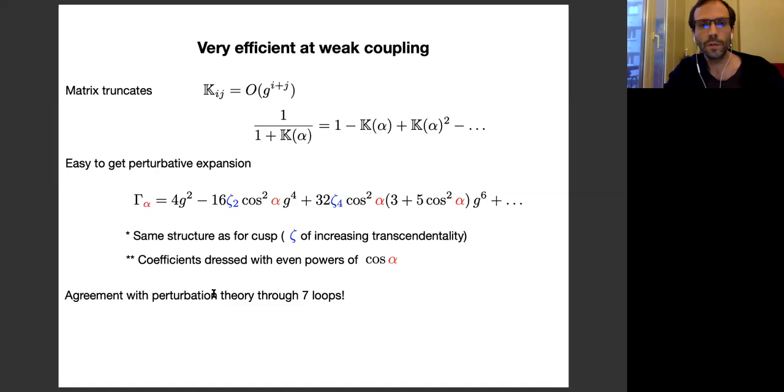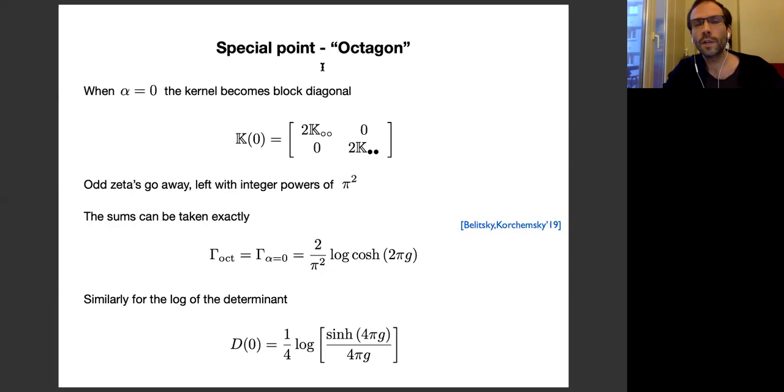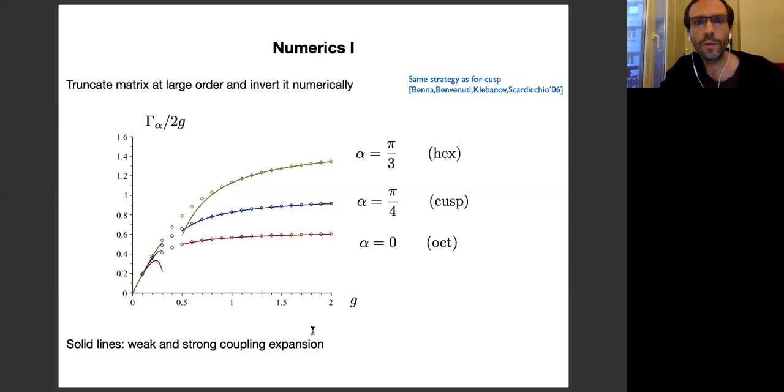So that is a formula. And that's a very convenient way of encoding the answer. At weak coupling, for instance, the matrix truncates very quickly because the matrix elements of this kernel are extremely small in the coupling. And so we can just invert by power expanding it, and generate these numbers here. So what we see is the structure is the same as for the cusp, same zetas as for the cusp. The only difference is that the coefficients are not dressed by some powers of cosine alpha. And we found, of course, that there is agreement with perturbation theory through seven loops. We could also play a little bit with numerics to see, for instance, where is the radius of convergence. It tends to not be dependent on alpha. And we could also explore a little bit the nature of the singularity that will emerge, but I will skip that. So the octagon is a special point where we already knew, or expected to, I mean, we had some expectation for what the answer should be.